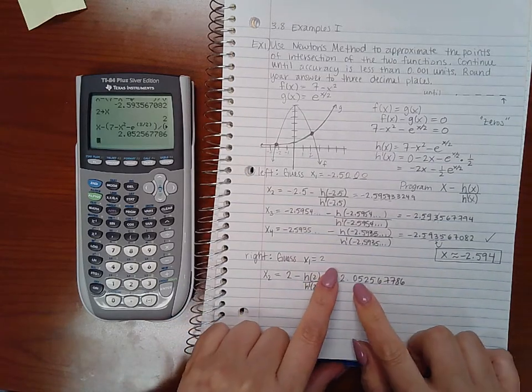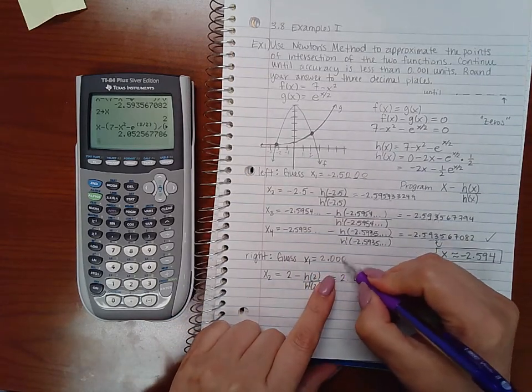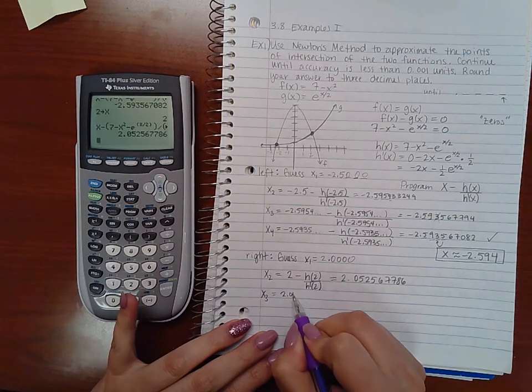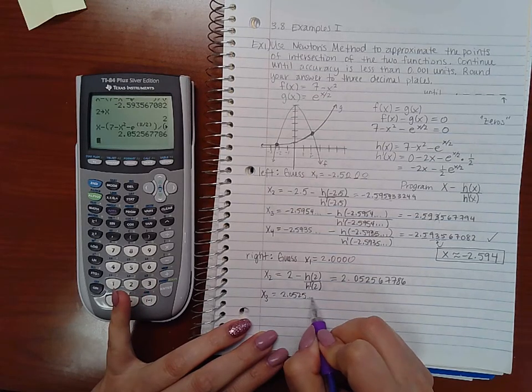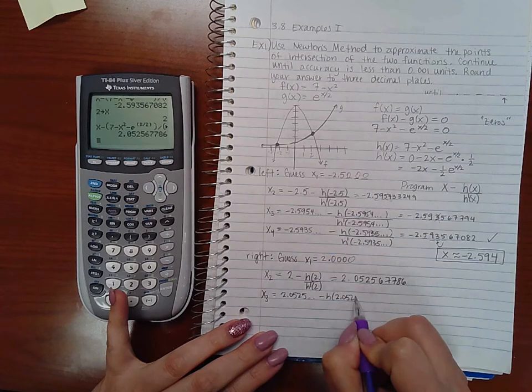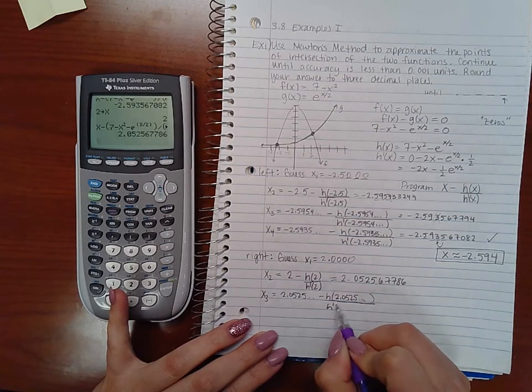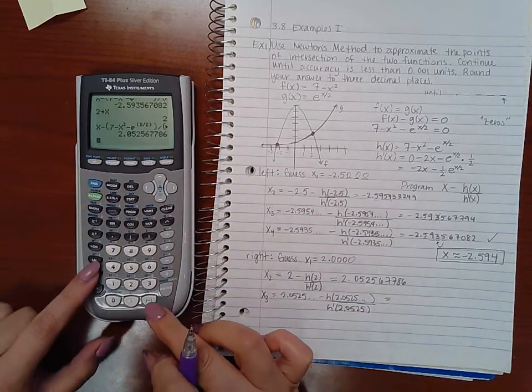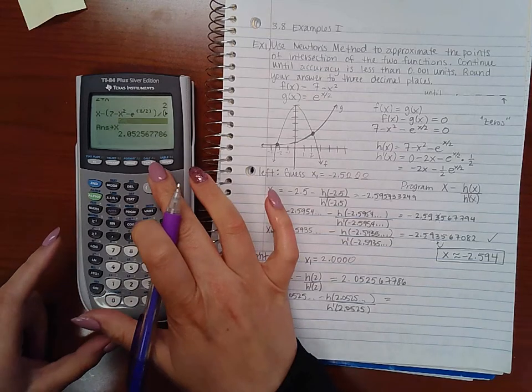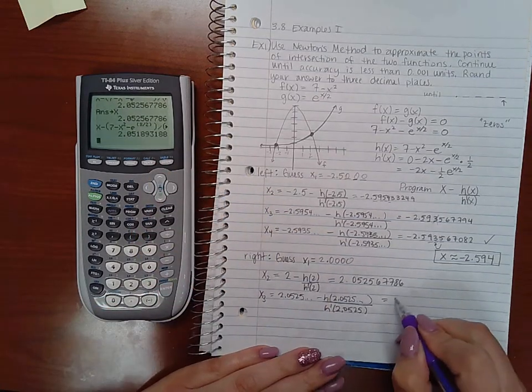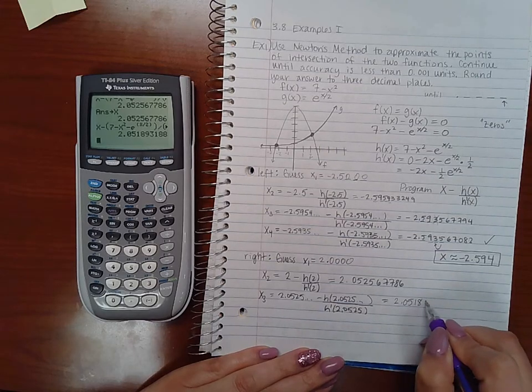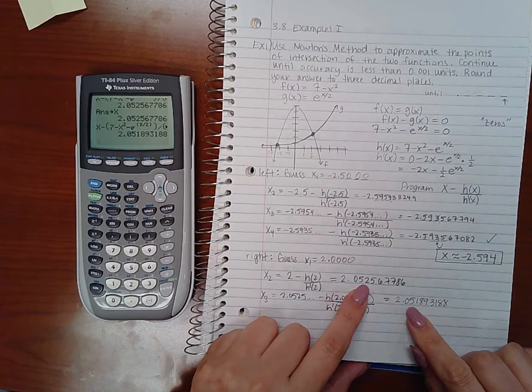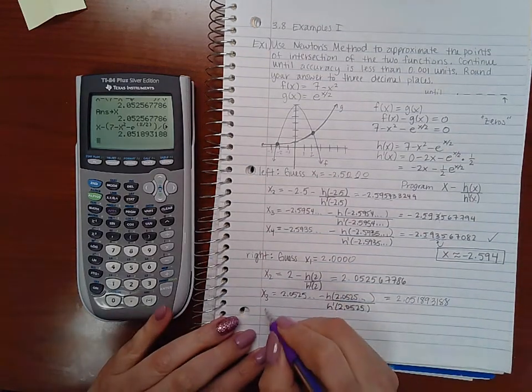These are not the same, right? They're not even the same within the second digit. So we got to keep going. We're going to find x3, which means 2.0525 minus h of 2.0525 over h prime of 2.0525. So let's see. Leave that in the calculator, store it as x. Then go plug it into the function, and we get 2.051893188. So the second digits are the same. The third digits are still off. So we've got to do another iteration.